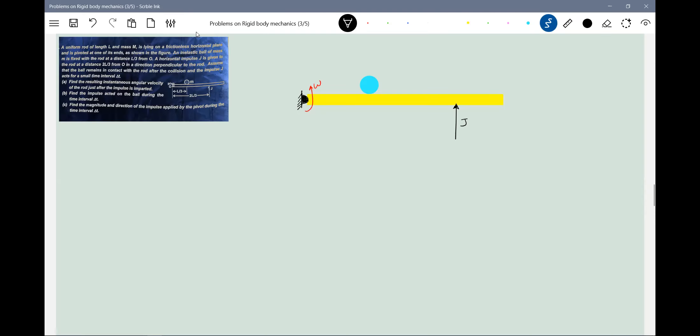So then what is the expression? J into two L by three should equal moment of inertia times Omega. Moment of inertia of the rod will be ML square by three, that of the particle... So two J equal to L times capital M plus small M. So Omega equals two J by M plus small M into L.